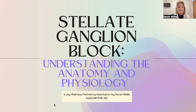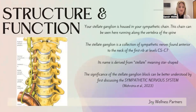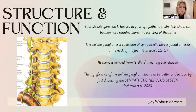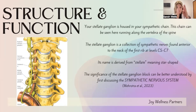Today we're going to understand the anatomy and physiology of the stellate ganglion block. The stellate ganglion is housed in your sympathetic chain — that yellow chain you can see running down the side of the spine. This chain demonstrates the layout of the nerve bundles that run alongside the spine, which helps us understand our approach and how we inject near that stellate ganglion.